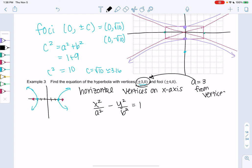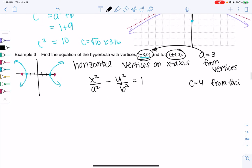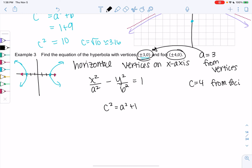And so we already know a squared because we know the vertices. So a is 3 from the vertices. We don't know b, but we know c is 4 from the foci. And so we can quickly find b. So b, we learned what? We learned c squared equals a squared plus b squared for hyperbolas.